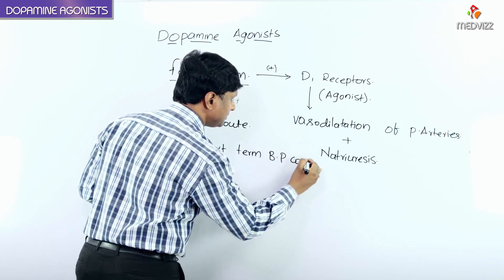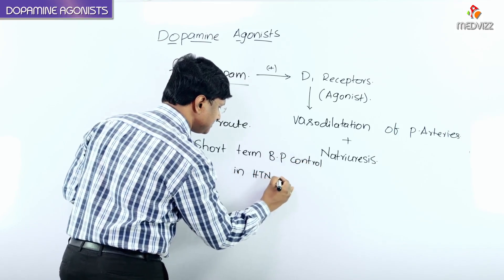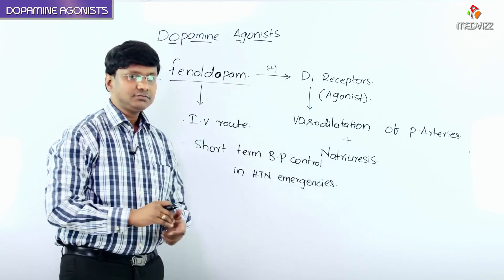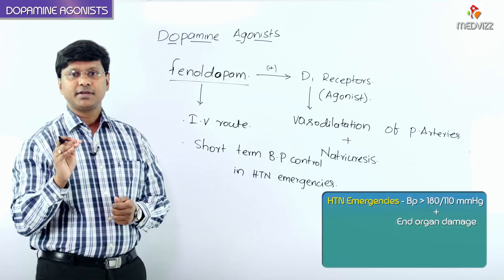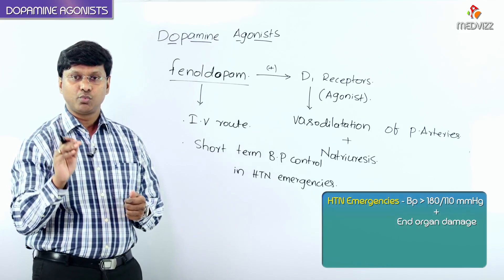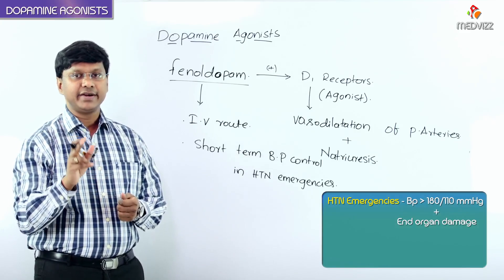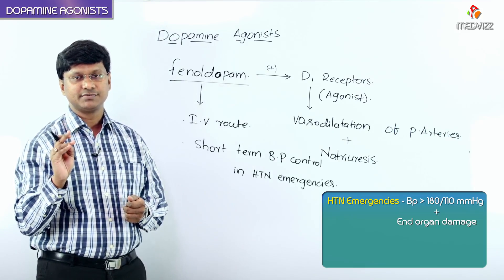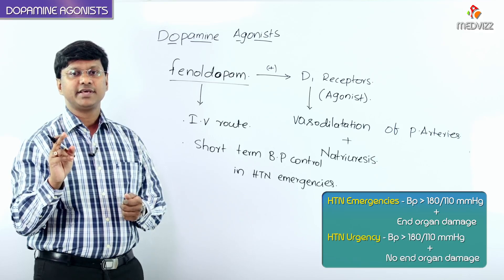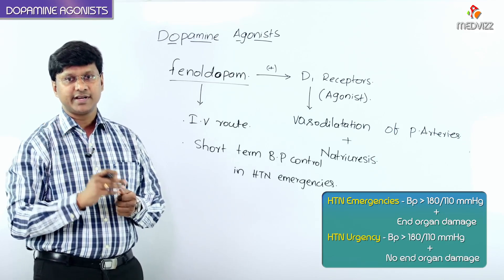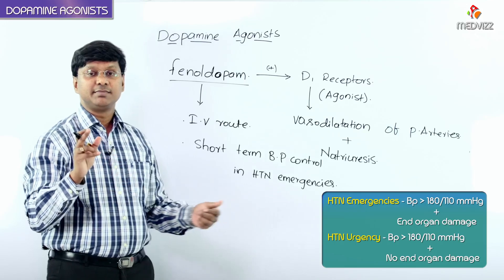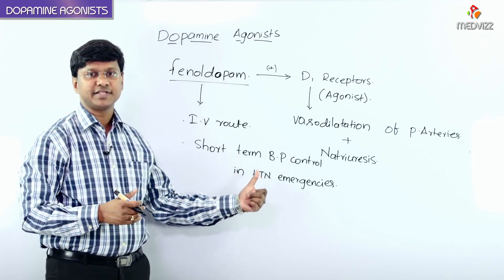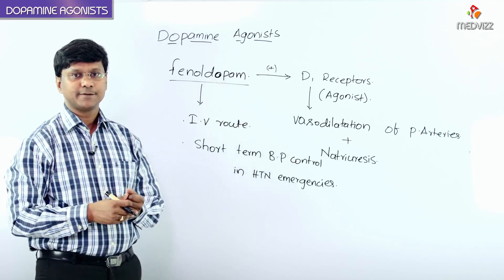It is used via the intravenous route for short-term blood pressure control in hypertensive emergencies. A hypertensive emergency is when blood pressure is more than 180/110 mmHg along with end organ damage. In contrast, hypertensive urgency is when blood pressure is more than 180/110 mmHg but there is no end organ damage. Fenoldopam is used in hypertensive emergencies by intravenous route.